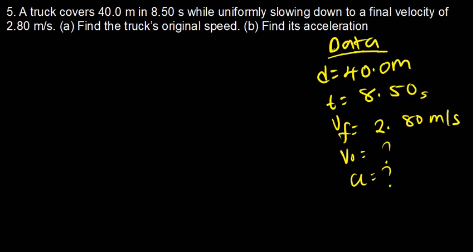Before you solve any question in physics, the first thing to do is to come up with the data. I've listed the data: the displacement — which you can call D, X, or S — is 40 meters. The time is 8.50 seconds. The final velocity is 2.80 meters per second. We don't know the initial velocity and we also don't know the acceleration, so I've put a question mark on both.